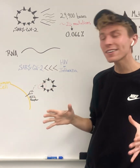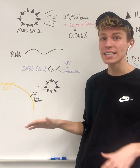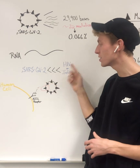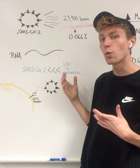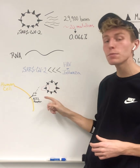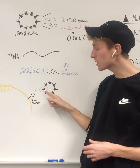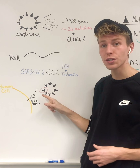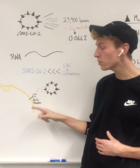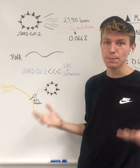Luckily, SARS-CoV-2's mutation rate is far less than other viruses that also use RNA, such as HIV or the flu. But what's of most concern is any mutations that could occur on the spike protein. The spike protein is critical to interact with the ACE2 receptor on our human cells to allow the virus to infect and then replicate.